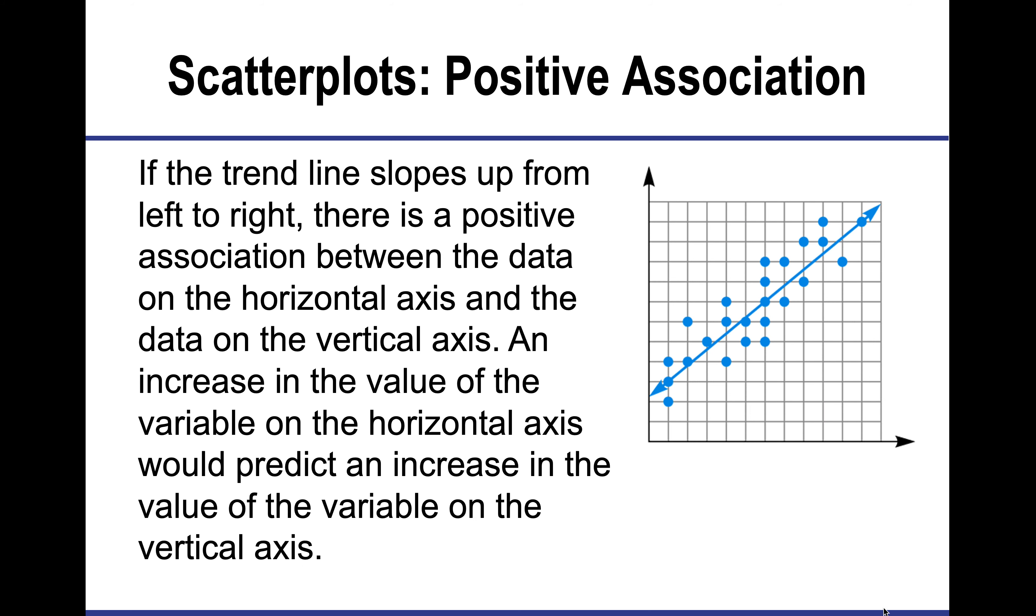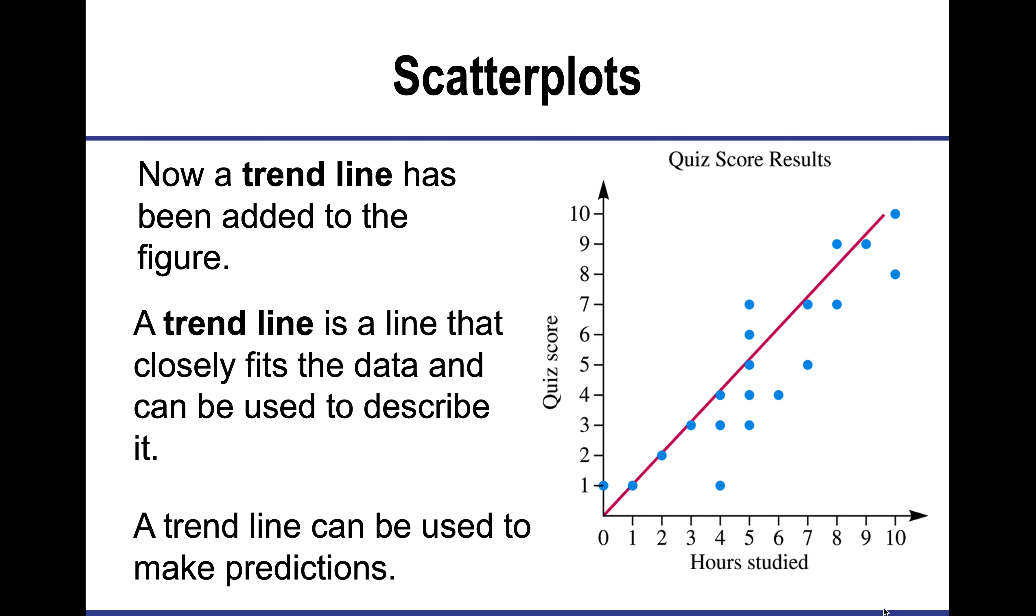If a trend line moves up from the left to the right, we say there's a positive association, which means as one variable increases, the other does too. So here, as hours studied increases, the quiz score also increases.